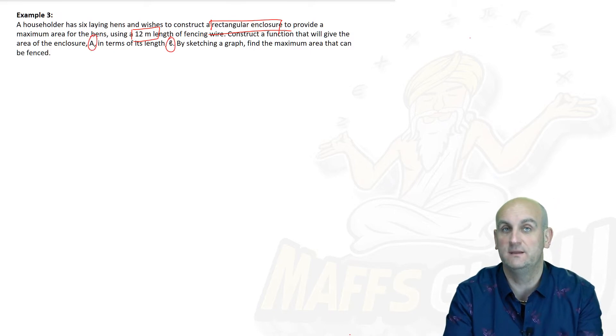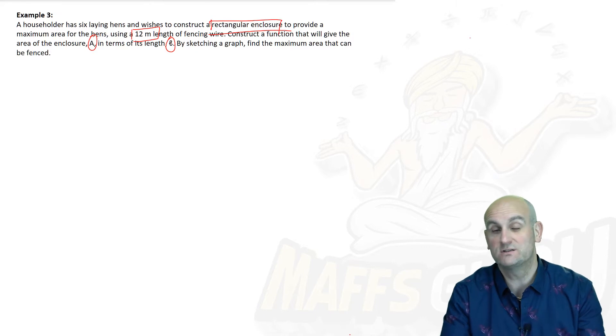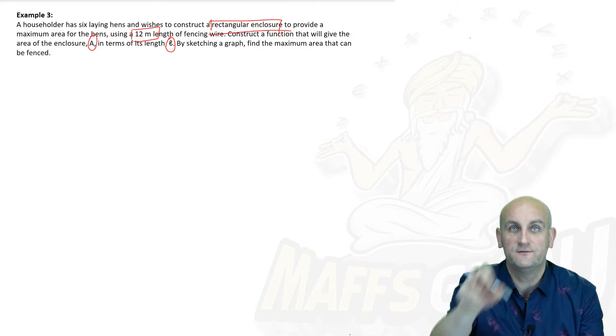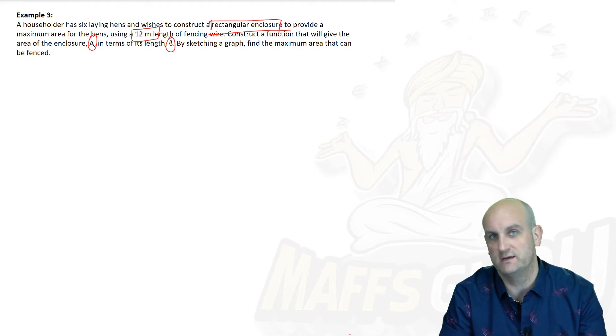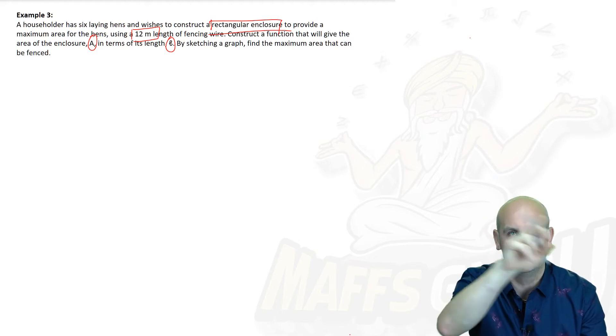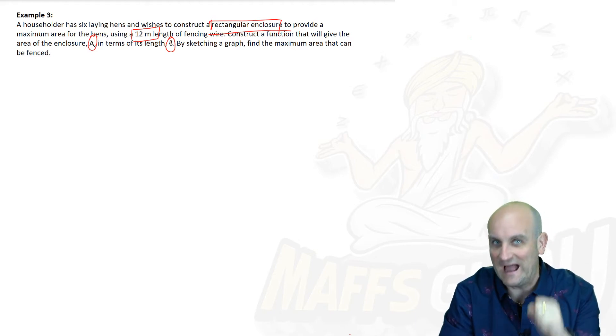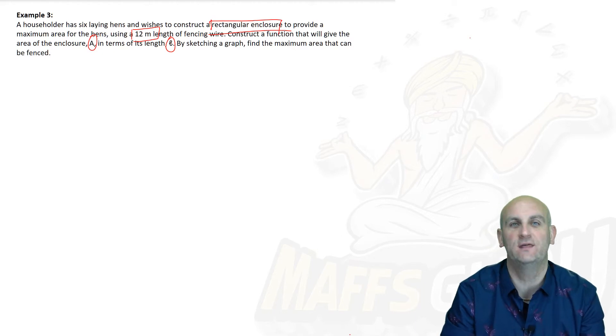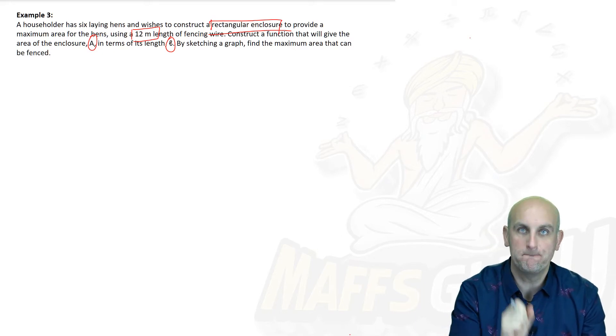A householder has six laying eggs. With all due respect, who cares? It's trying to trick you before you even start. It's trying to deflect you from the important stuff. Not interesting. And wishes to construct a rectangular enclosure. That's the first part that's actually important, to provide a maximum area for the hens. That's the important part as well. Maximum area using 12 meter length of fencing. Construct a function that will give the area of the enclosure in terms of its length L. Area's got to be defined by the letter A. And the length has to be defined by the letter L. Sketch a graph and find the maximum area. Seems like a lot of stuff in here. But I'm going to tell you now, these questions are so formulaic, it's almost a joke.